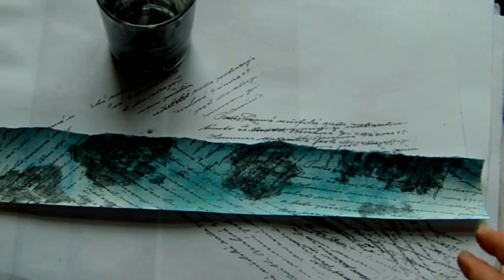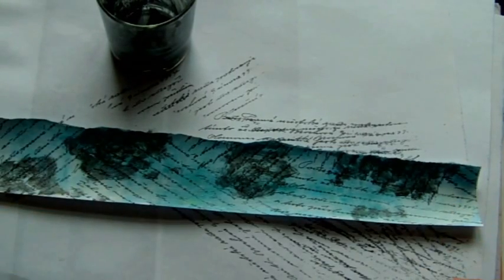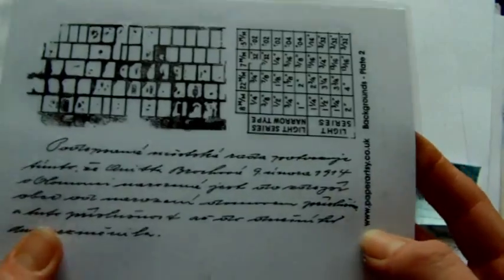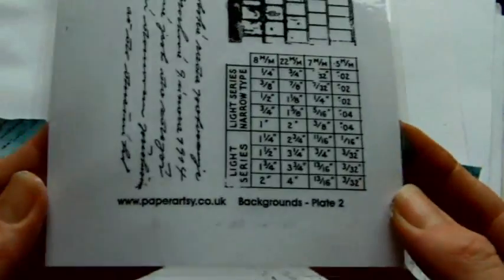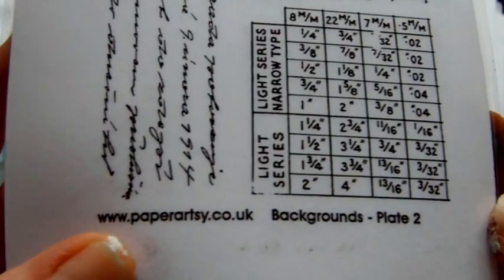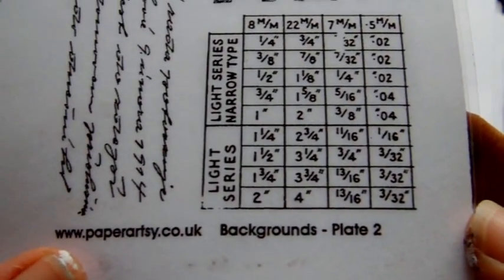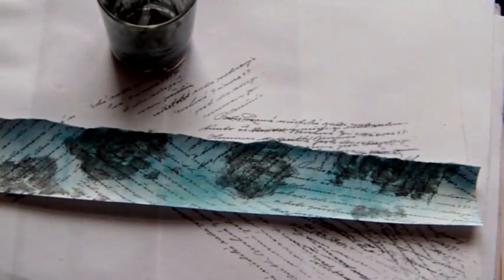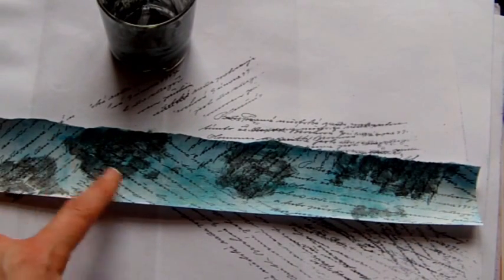So I've let the piece dry and I've stamped it with this stamp here which is from a Paper Artsy set. So there's the URL and it's the backgrounds too. And I've stamped it in StazOn just randomly.